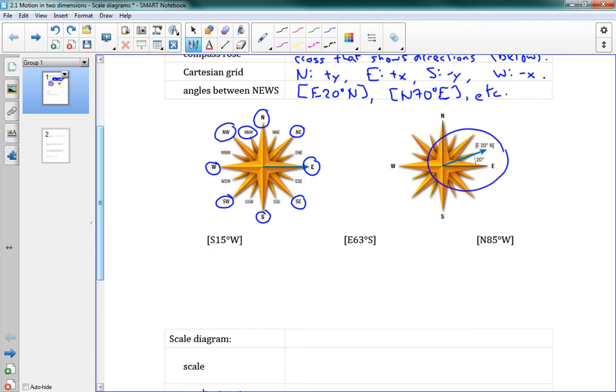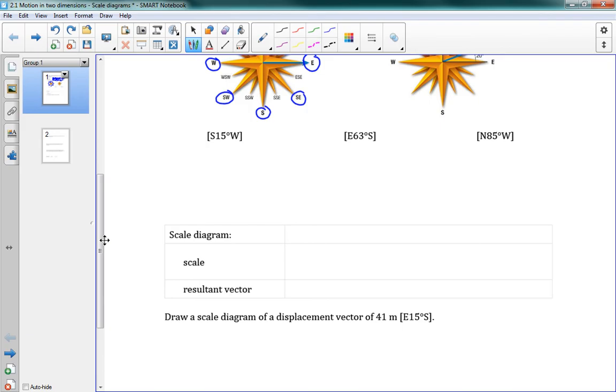On this picture to the right here, this is an example of east 20 degrees north. You can see that we started going east, we went 20 degrees up in the north direction. Notice how that's written, it has square brackets around the direction. We've got a couple directions down here, and we're going to sketch them out. South 15 west, east 63 south, and north 85 west. That's how we sketch out those sorts of directions.